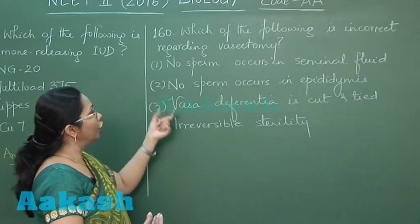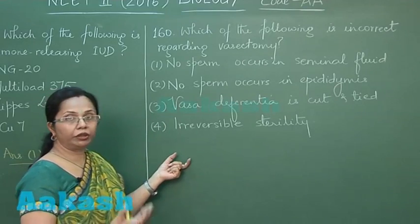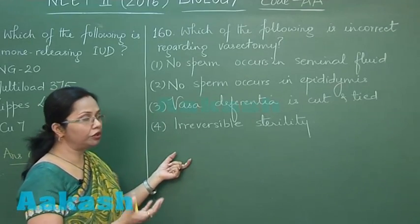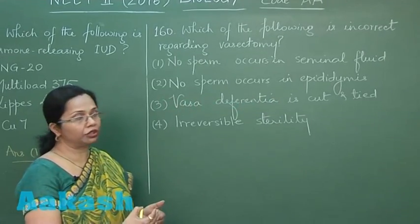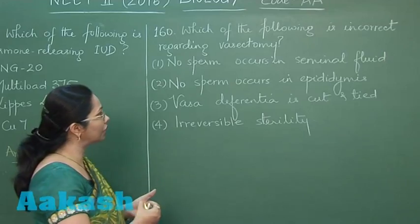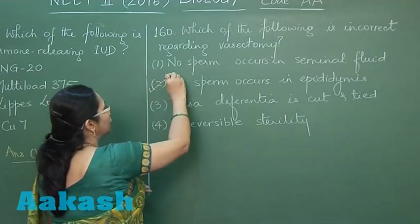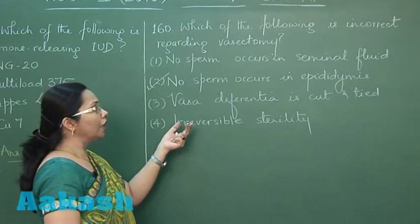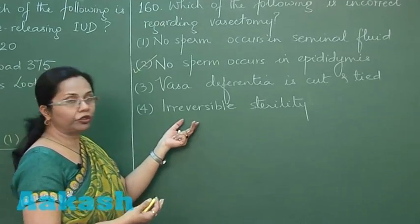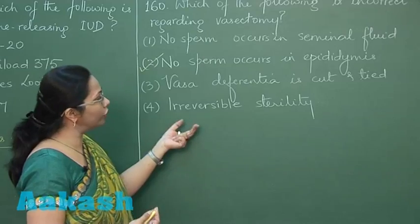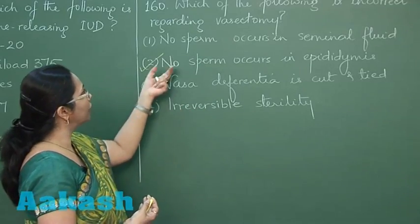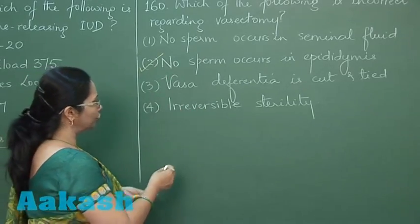No sperms occur in epididymis - but epididymis will be having these sperms because it is after epididymis that vas deferens occurs, and that is cut. So this is incorrect. While this is a terminal method of contraception where the reversibility is very poor, so that's why we can still take it as correct. So the best answer is option two.